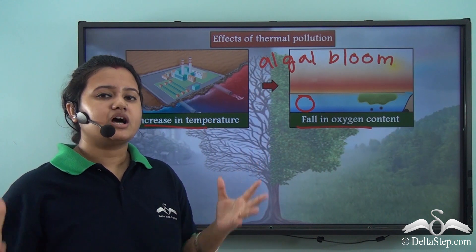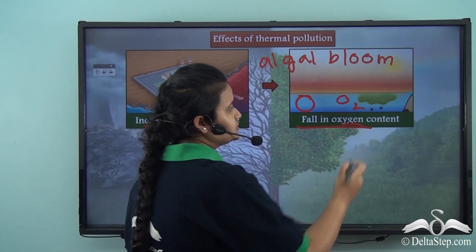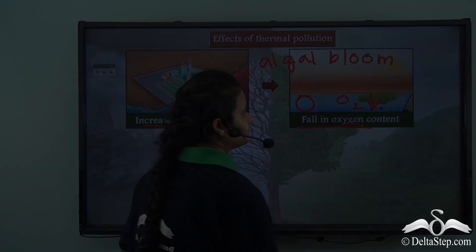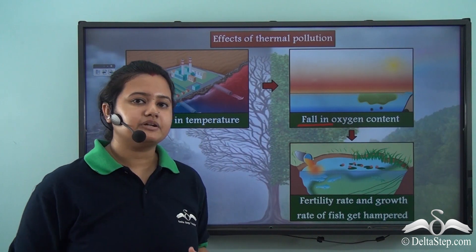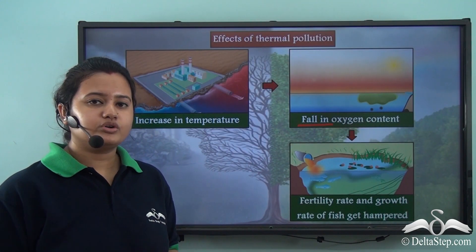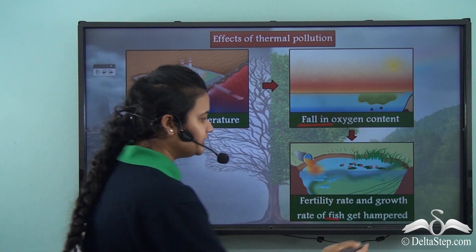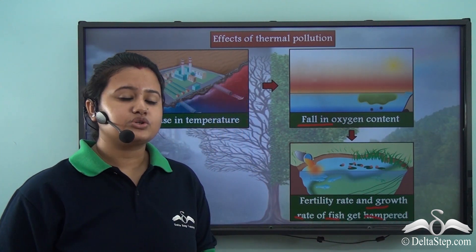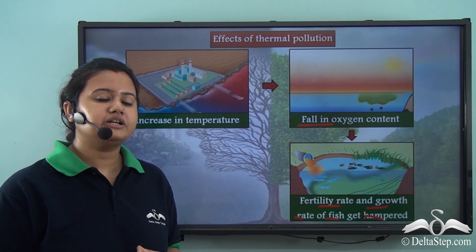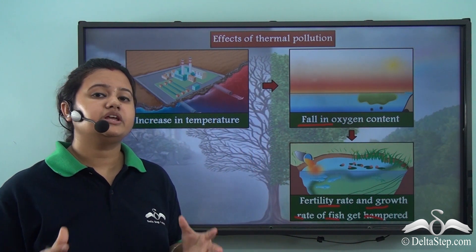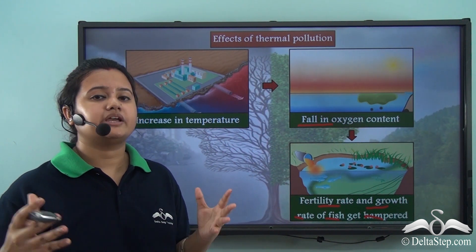These algae use up all the oxygen dissolved in the water, so the availability of oxygen in water bodies decreases. As a result, marine life gets hampered — due to insufficient oxygen, fishes and aquatic plants cannot breathe properly. The growth rate of fishes is hampered, and the fertility rate of fishes gets affected because various internal organs and metabolic activities are impacted.